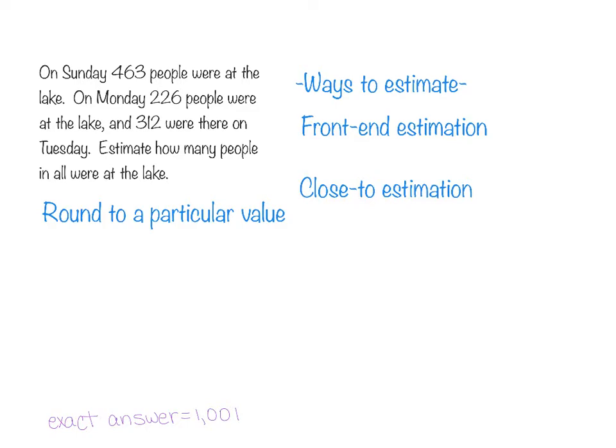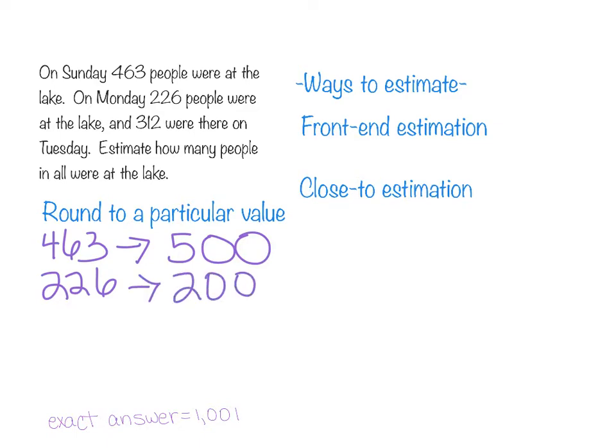When we look at 463, if we round that to the nearest hundred, it's going to change to 500. We look at 226, it's going to change to 200, and 312 is going to change to 300. If we add all of those together, we get roughly 1,000 would be our estimate if we round to a particular value for that problem.